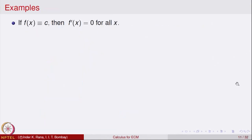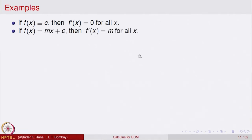As we observed earlier, for a constant function the derivative at every point is equal to 0. For the linear function f of x equal to mx plus c, the derivative is equal to m, which is the slope of the line. The slope is the same everywhere, so the derivative of a linear function is a constant function: f′(x) equal to m for every x.